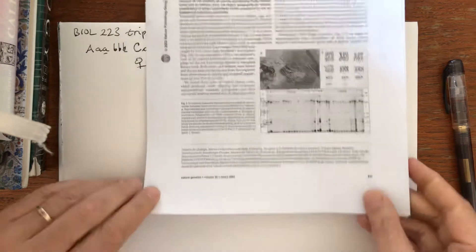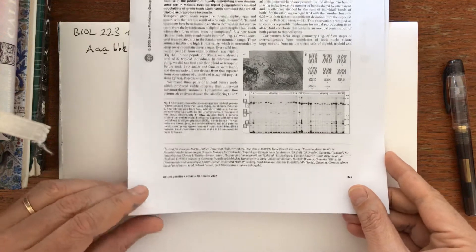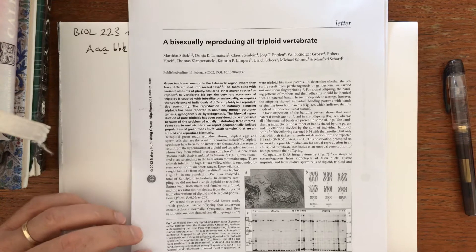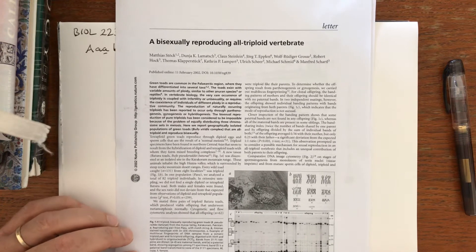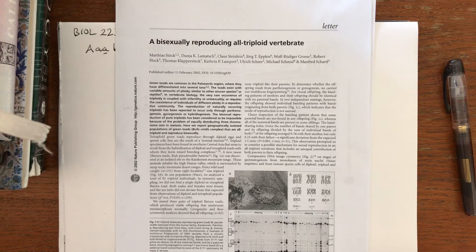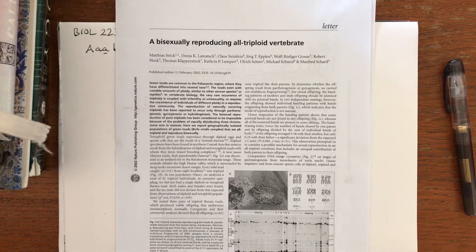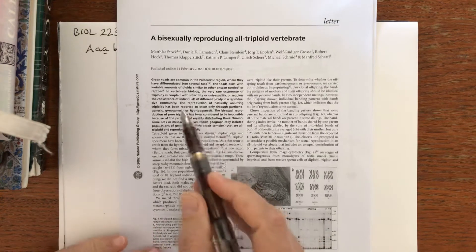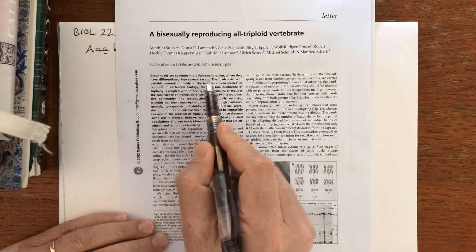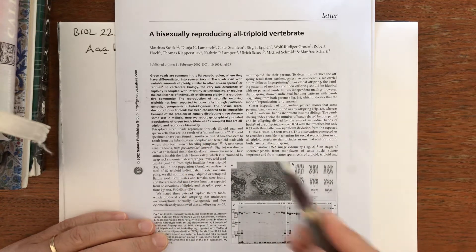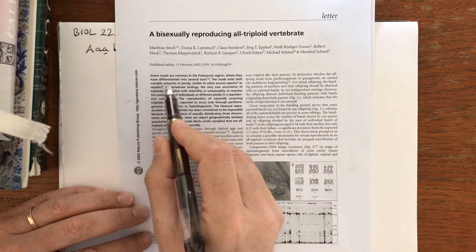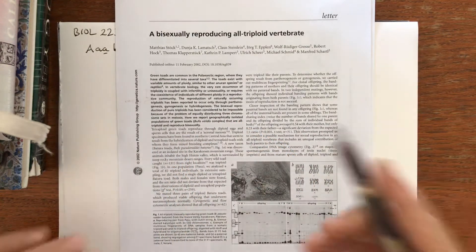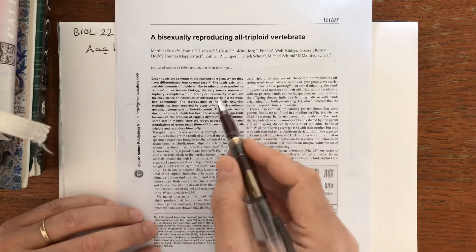This is Nature Genetics March 2002 paper by Stöck et al: A bisexually reproducing all-triploid vertebrate. That's a very strange thing. I saw that title and said wow, that's something to talk about. Green toads are common in the Palearctic region, which includes here and everything Europe and Asia, where they have differentiated into several taxa.